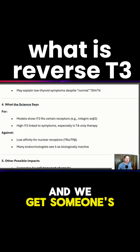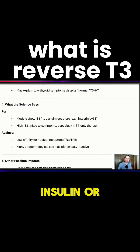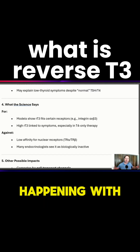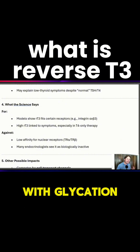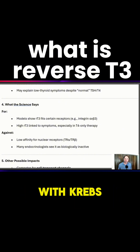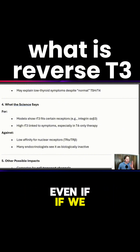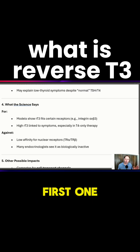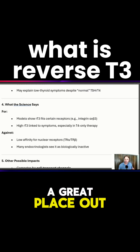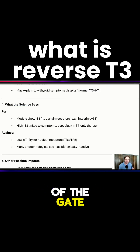I try to look at everything. When we make a change and get someone's insulin or blood sugar better, there's so much downstream that's happening — with inflammation, glycation, nutrients, the Krebs cycle. Even if we work in the domino rally and knock the first one or two dominoes over, we're going to be in a great place out of the gate.